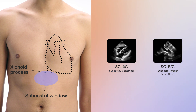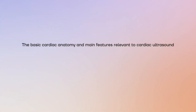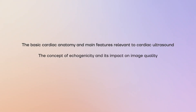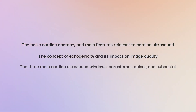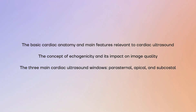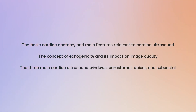Each window gives a unique perspective of the heart's anatomy and function. In this video, we covered the basic cardiac anatomy and main features relevant to cardiac ultrasound, the concept of echogenicity and its impact on image quality, and the three main cardiac ultrasound windows — parasternal, apical, and sub-costal. By mastering these fundamentals, you will be better prepared to perform cardiac ultrasound exams with confidence.